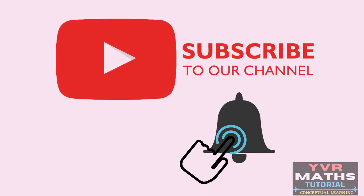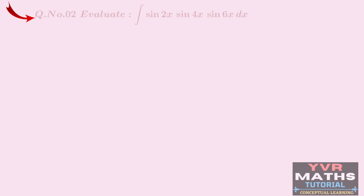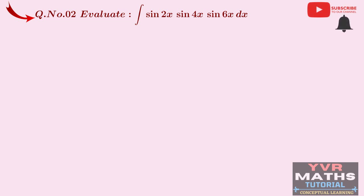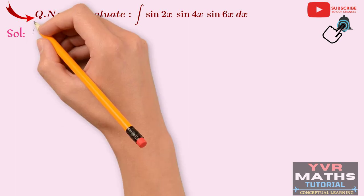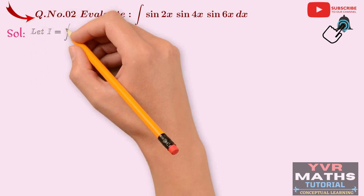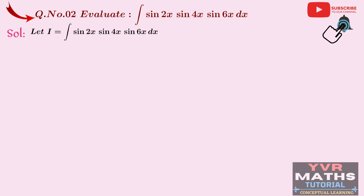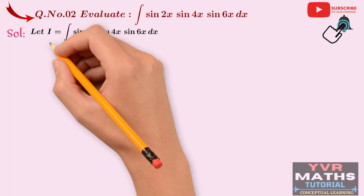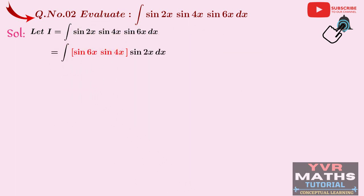Based on this concept, let us discuss one more model. Question number 2: Evaluate integral sin(2x)·sin(4x)·sin(6x) dx. In the previous question the product involved cos ratios; now the product involves sin ratios. Let I = integral sin(2x)·sin(4x)·sin(6x) dx. Like the previous problem, take the angles in decreasing order: sin(6x)·sin(4x)·sin(2x) dx.